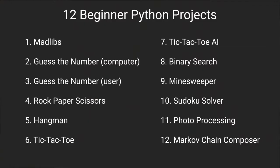Now a couple of notes before we begin. Here's a list of all the projects. These projects are in order from what I consider to be the easiest, most beginner friendly to the most complex. They'll range from Mad Libs, which is a string concatenation, to an unbeatable tic-tac-toe AI, to photo editing in Python.